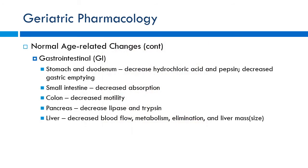From a GI standpoint, you'll see the fewest changes overall, but this is where many drug-drug and drug-food interactions arise. There may be delayed gastric emptying and decreased hydrochloric acid secretion. Overall absorption doesn't change greatly for drugs, but grapefruit juice or calcium in milk can impair or alter drug absorption. Many patients develop chronic constipation — multifactorial, from disease states or medications. Liver blood flow decreases, meaning fewer drugs get delivered to the liver for metabolism.